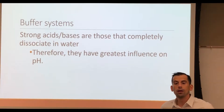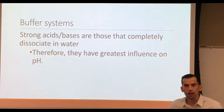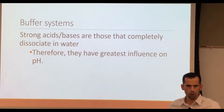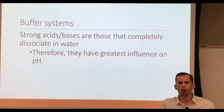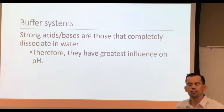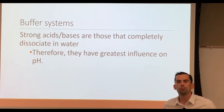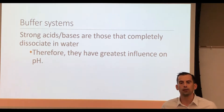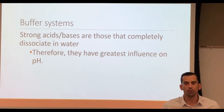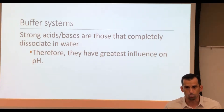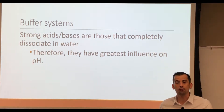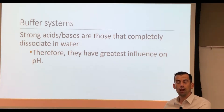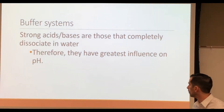A buffer is a chemical system — not an anatomic and physiologic system like how our chapters are broken down in the textbook. Buffer systems are going to be important because we want to decrease the effect of any strong acid or strong base that's added to a solution. The less impact we can have from these things being added to our system, the less change in pH we're going to wind up seeing.